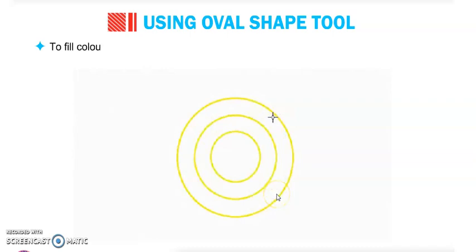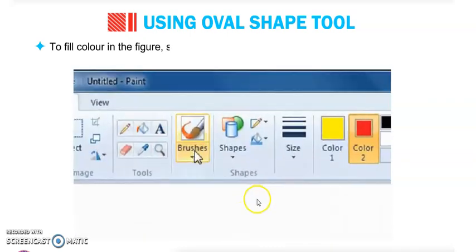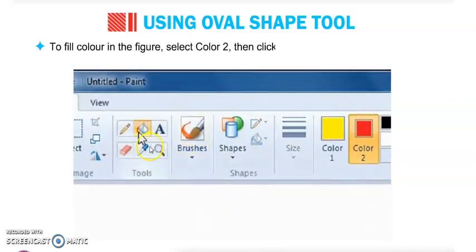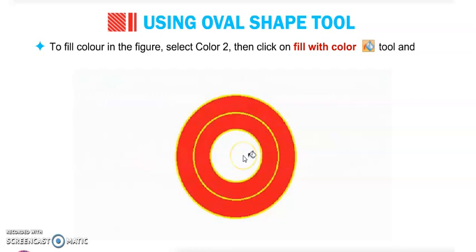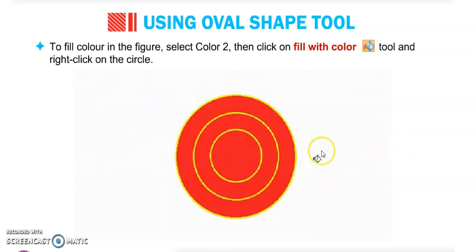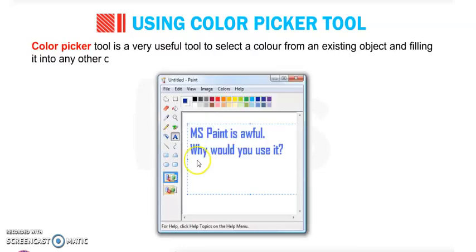To fill color in this figure, select the Fill With Color tool, then right-click on the circle. Next tool is the Color Picker tool.